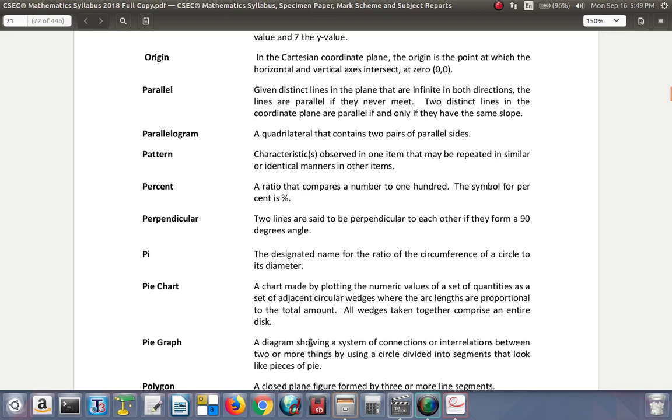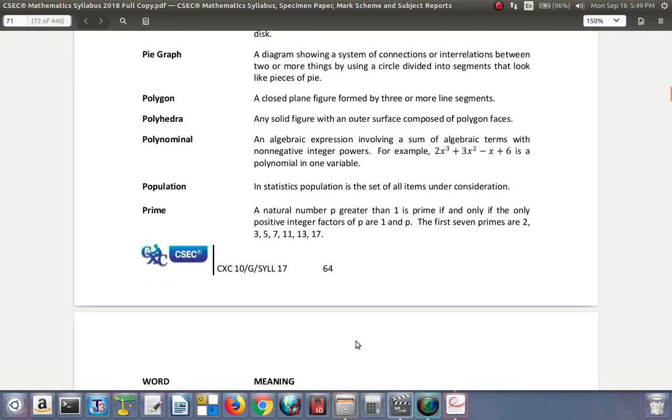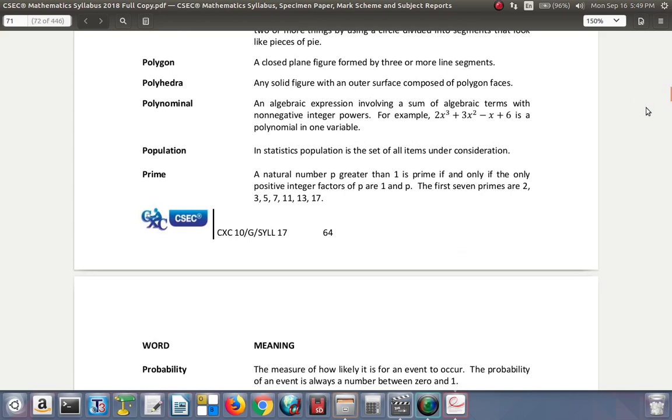Pie Graph. A diagram showing a system of connections or interrelations between two or more things by using a circle divided into segments that look like pieces of pie. Polygon. A closed figure formed by three or more line segments. When it has three sides, you see it's a triangle. When it has four sides, a quadrilateral. When it has five sides, a pentagon and so on. And it must be closed.